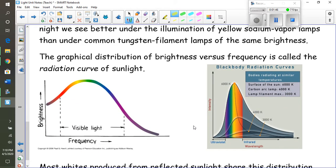This is a graphical distribution of the brightness versus frequency. It's called the radiation curve of our sunlight. And again, we see the peak of that curve in this yellow-green region here. It's also why I'm using yellow for my highlighter to really point things out.